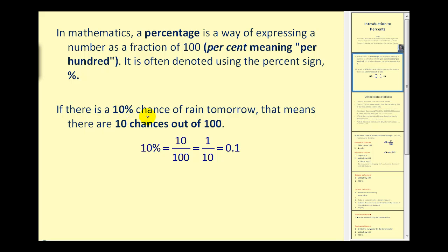If there is a 10 percent chance of rain tomorrow, that means there are 10 chances out of 100. So 10 percent is equal to 10 over 100, or 10 hundredths, which can be simplified to one-tenth, which can also be written as a decimal in the form of 0.1.